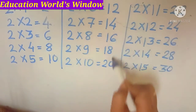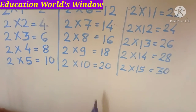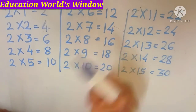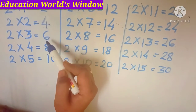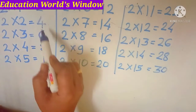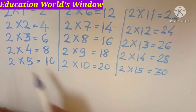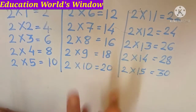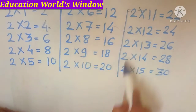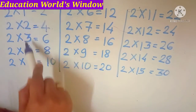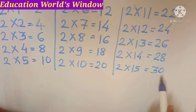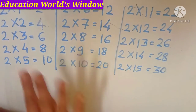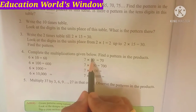The table is final. What is the pattern of this table? Every time I add the number of numbers — 2 plus 2 is 4, 4 plus 2 is 6, 6 plus 2 is 8, 8 plus 2 is 10. I have the number of numbers — first, second, and third. So the fourth question is: complete the multiplications given below.